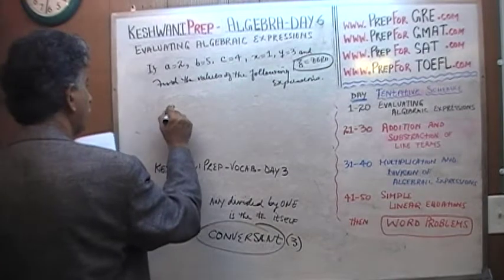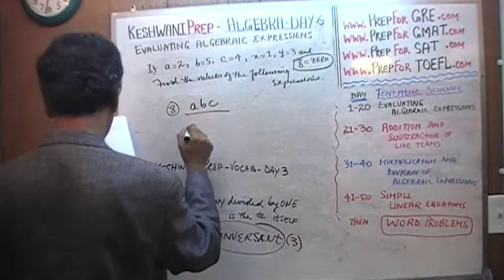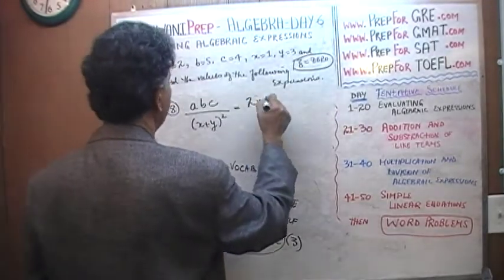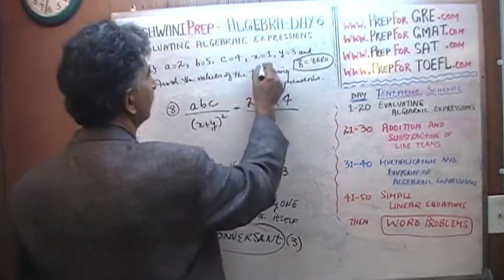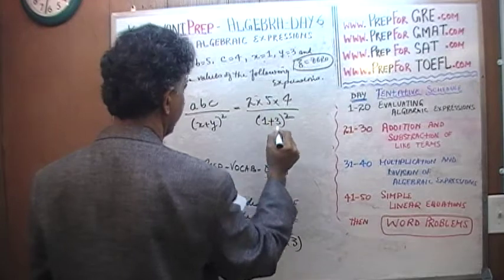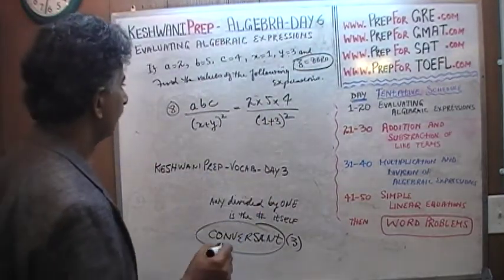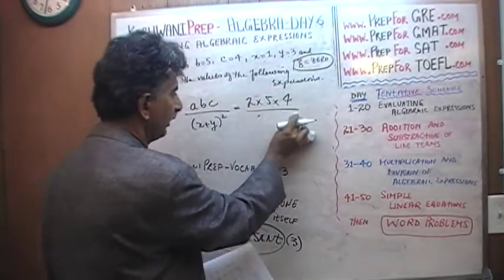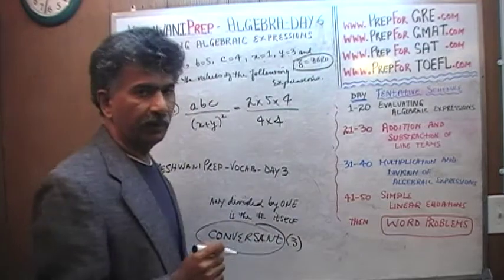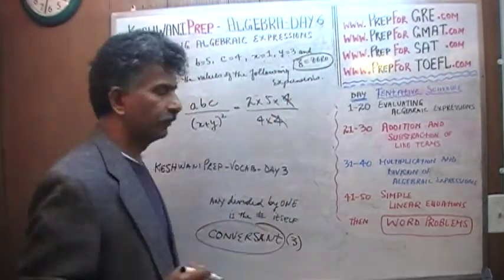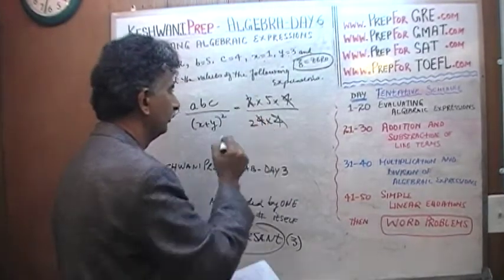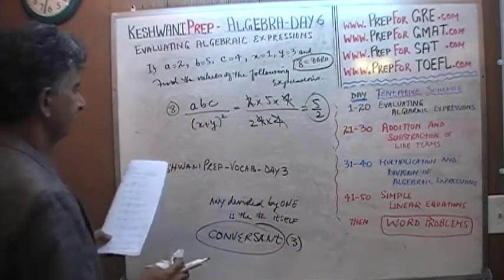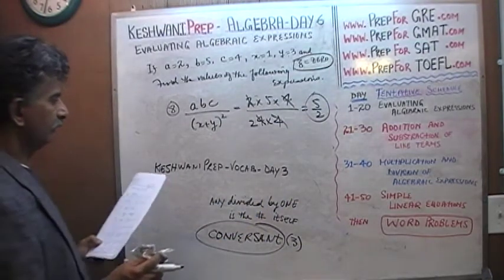Number 8. A times B times C over X plus Y squared. A which is 2 times B which is 5 times C which is 4 over X plus Y, X which is 1, Y which is 3, 1 plus 3 squared. Which can be written as 1 plus 3 squared. 1 plus 3 which is 4, 4 squared which can be written as 4 times 4. And now if you want to divide the top and the bottom by 4, we can knock out this 4. If you divide the top and the bottom by 2, this 2 goes out and this 4 becomes 2. So it turns out that the answer is 5 halves, 5 over 2.